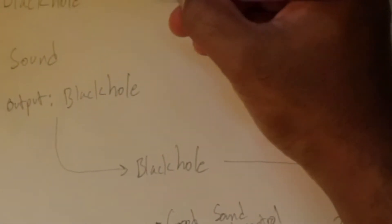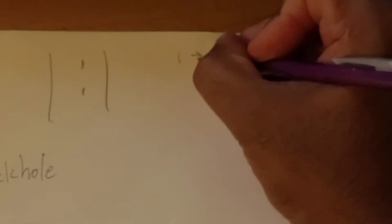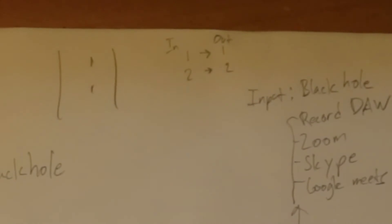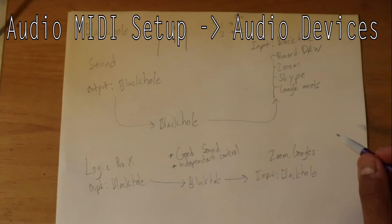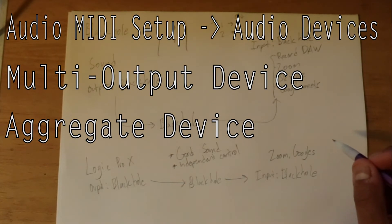One thing to remember is that Black Hole is one-to-one: if you go in on channel one, it goes out channel one. Two goes to two, and so on. That is not the case when you start dealing with audio interfaces. If you want to get a little deeper into it, you can look at how your system preferences work and look up multi-output device and aggregate device. Multi-output devices are for outputs, and aggregate devices are for inputs or microphones — they allow you to combine those two things.